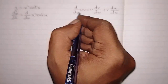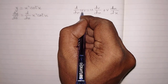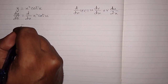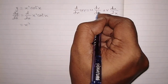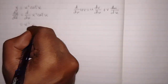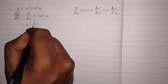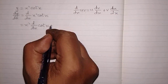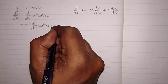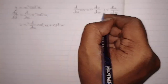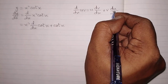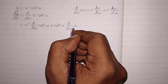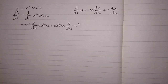We can see that x² is in place of u and cot(x) is in place of v. So first we write u, which is x², and then the derivative of v, so we write dy/dx of cot(x), then plus v, which is cot(x), and then the derivative of u, which is dy/dx of x².